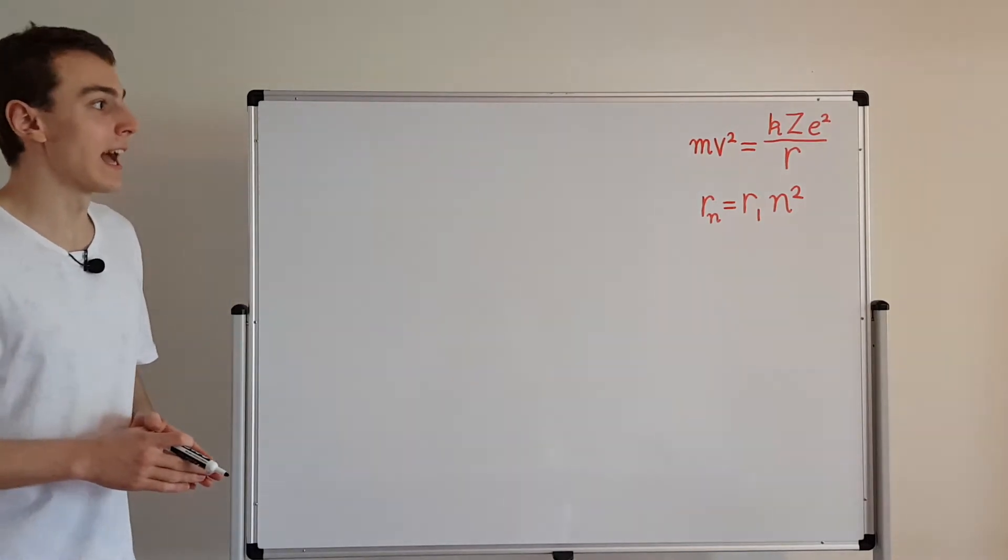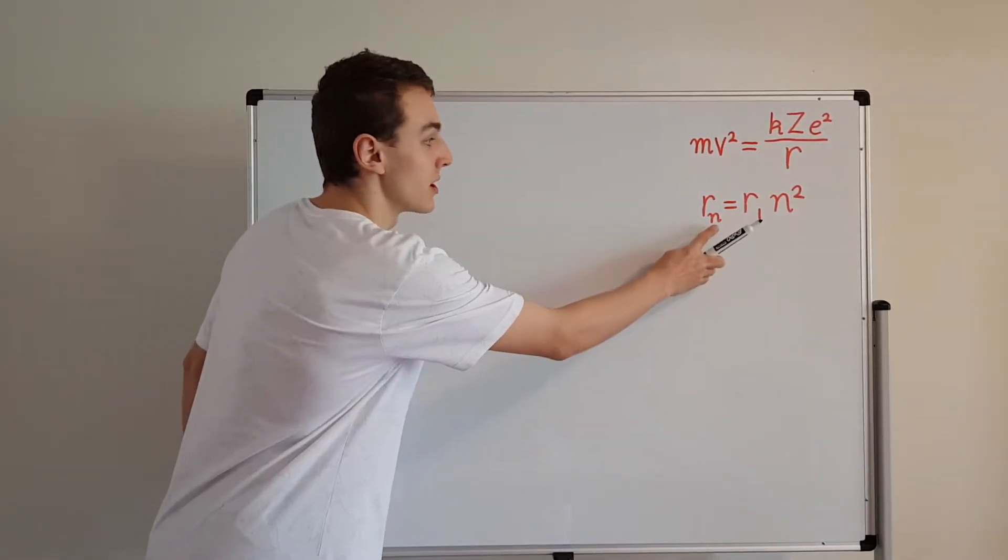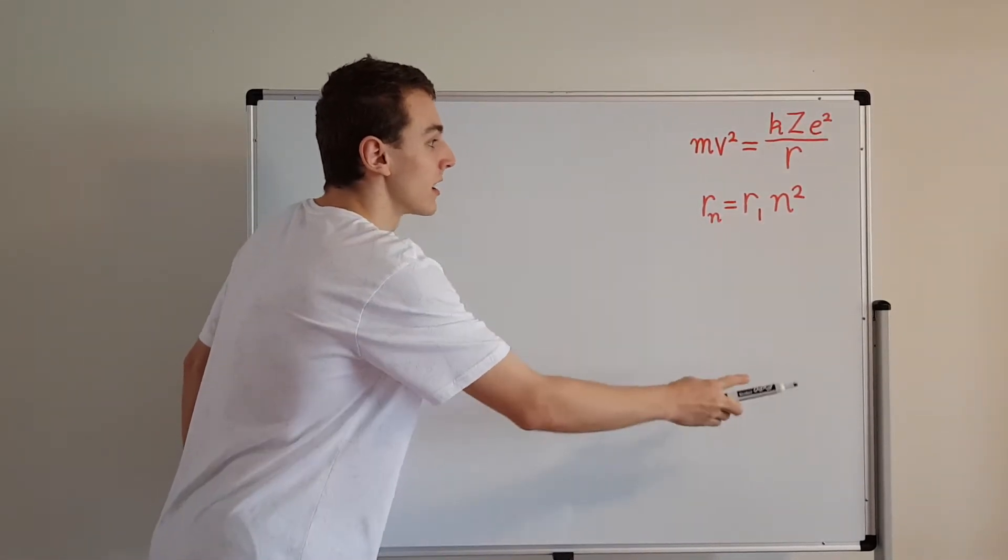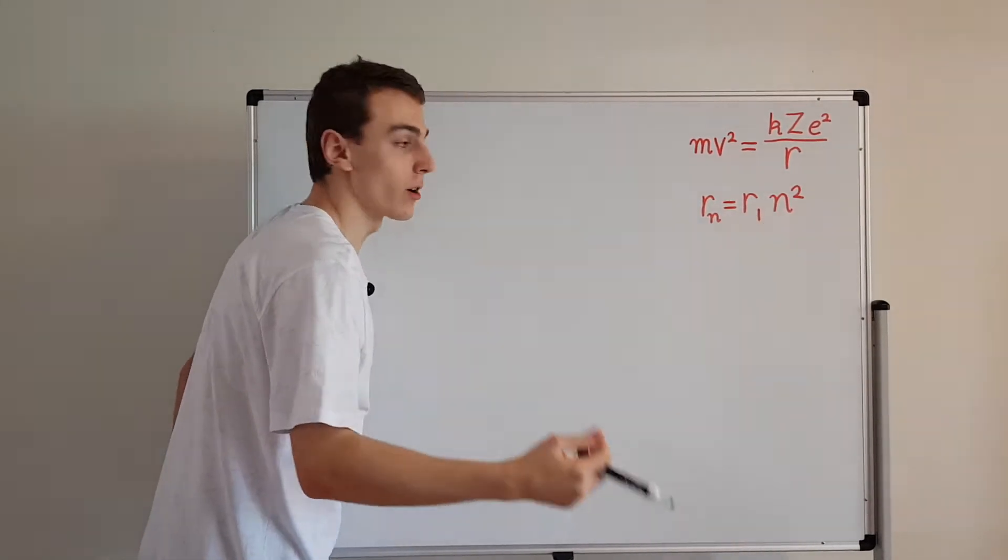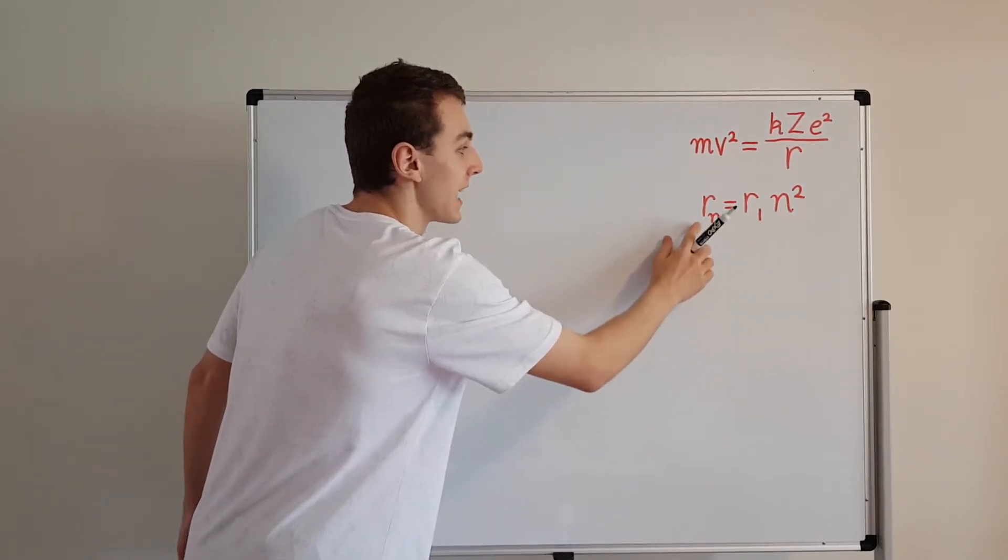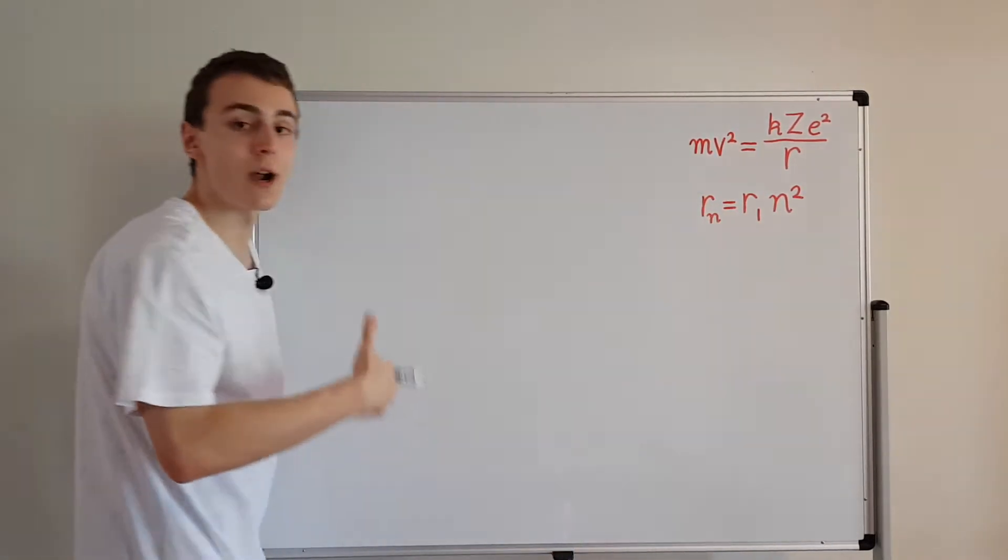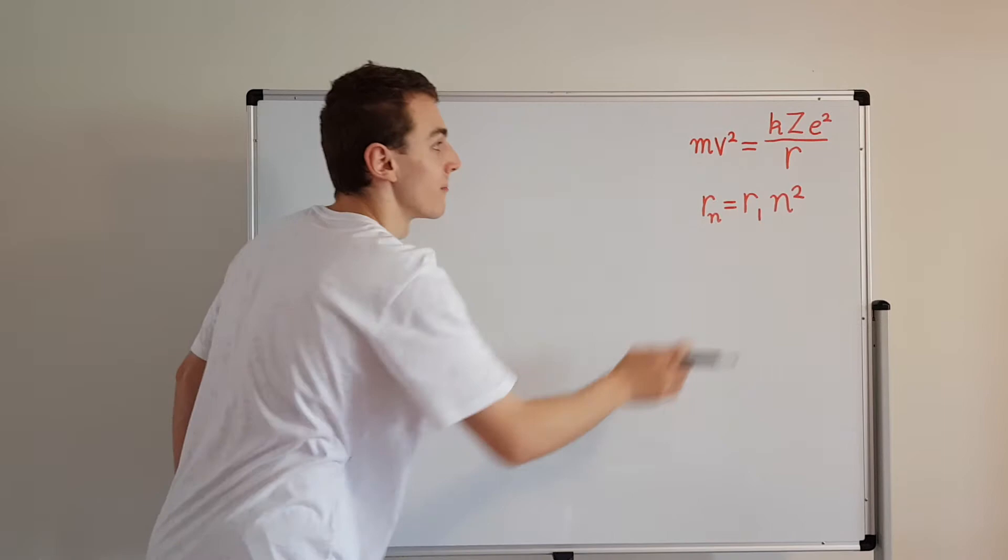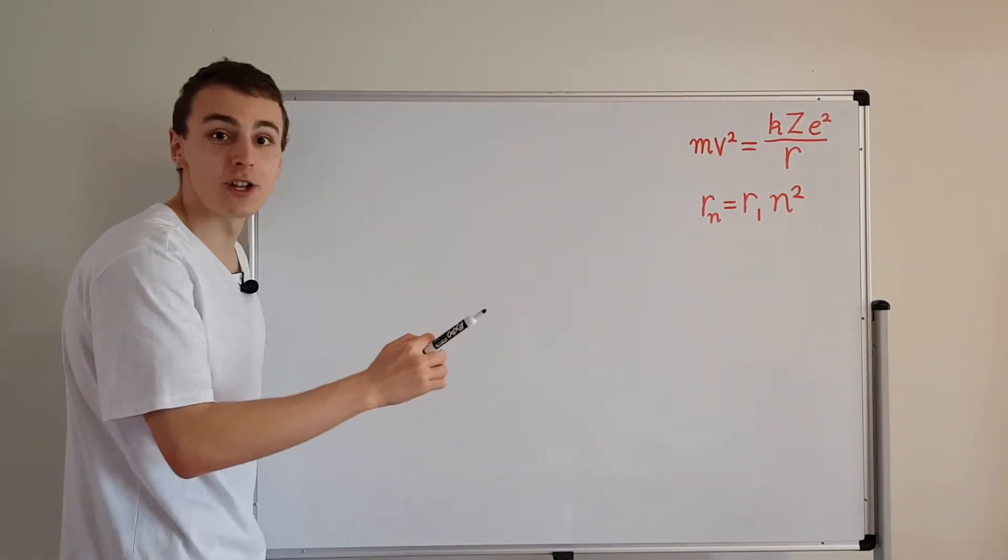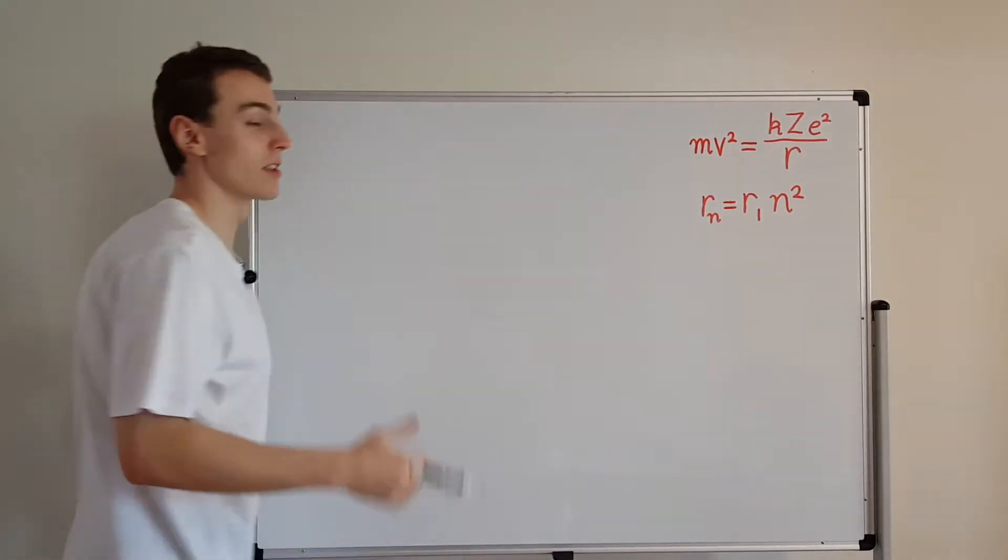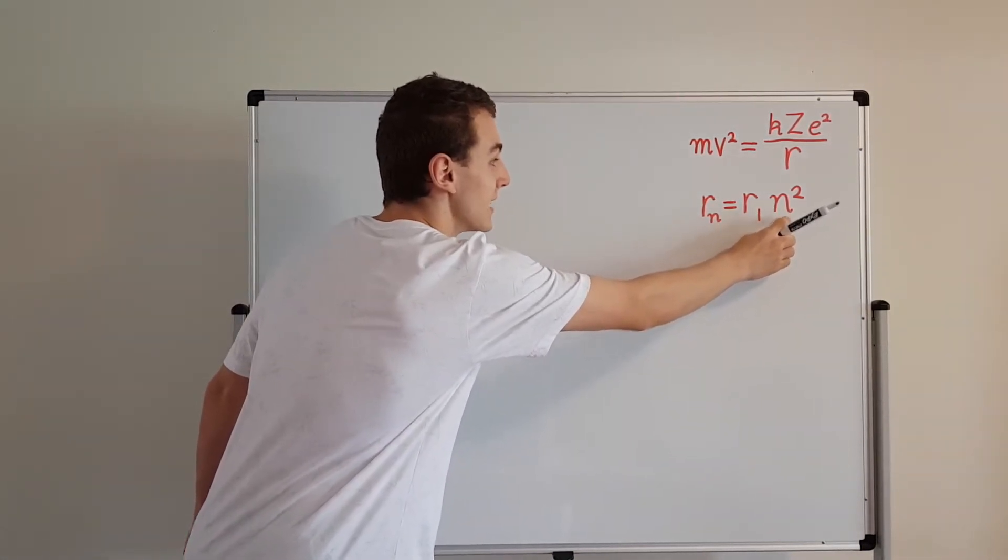So let's go ahead and have a look at some of the expressions that we derived in the previous video. We actually derived this expression in the previous video. This links together the radius and the nth integer. So this value is 1, 2, 3, 4. That's what n stands for. So the nth radius is the first radius times this factor of n squared. So it's a quadratic relationship proportional to the square of n. It's not linear, so that means the second radius is actually going to be four times bigger than the first radius. And the third is going to be nine times bigger. That's the property of this n squared factor.